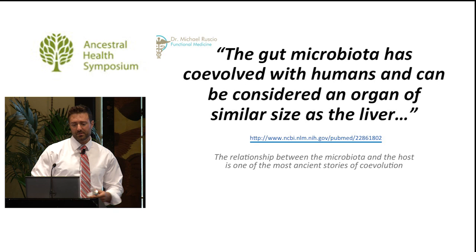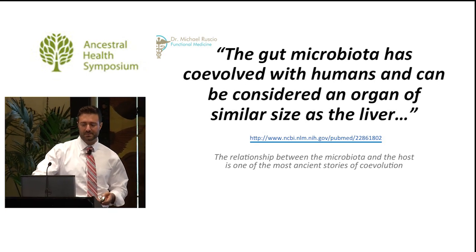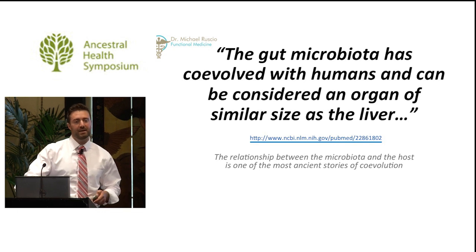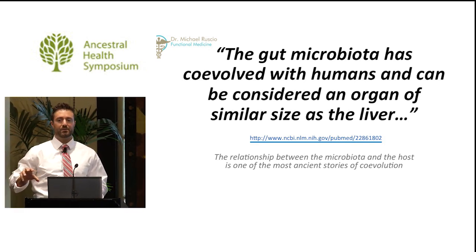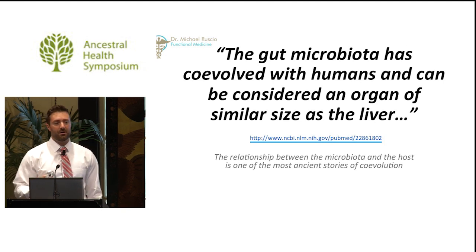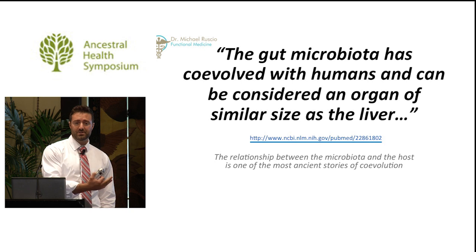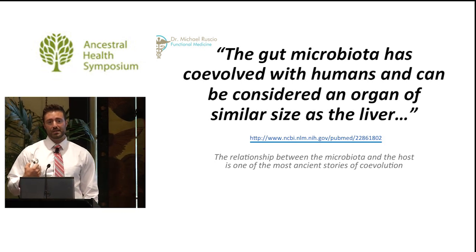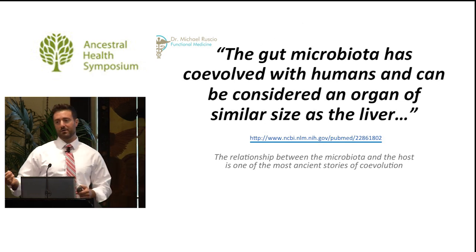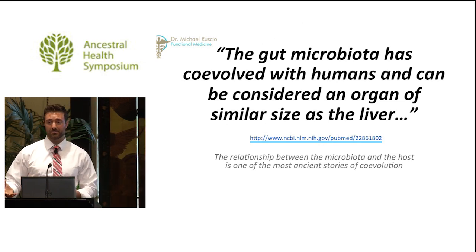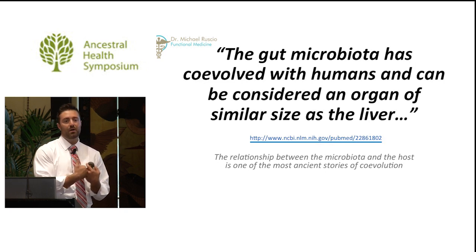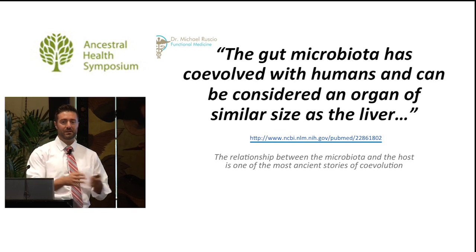The gut microbiota has co-evolved with humans and can be considered an organ of similar size as the liver. The relationship between the microbiota and the host is one of the most ancient stories of co-evolution. As we look at different populations, we see different bacteria that shift to allow that population to survive. Humans can't evolve genes quickly, so if the environment changes rapidly we're in trouble. But we can borrow from bacteria, which can rapidly evolve DNA through horizontal gene transfer, allowing us to keep pace with the changing environment.